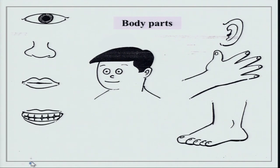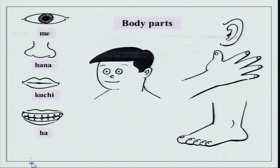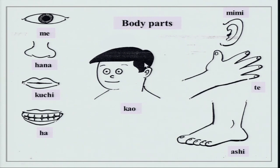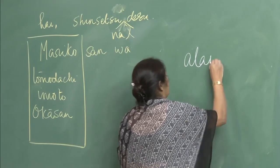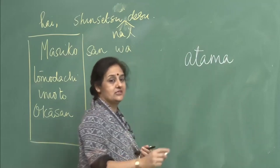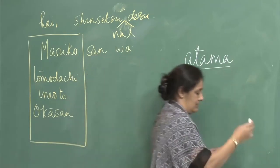We have done these body parts: me (eye), hana (nose), kuchi (mouth), ha (teeth), mimi (ear), te (hand), ashi (leg/foot), kao (face), and atama (head). Please do not pronounce it as 'Atma' — it is 'A-tama.' Please remember that.